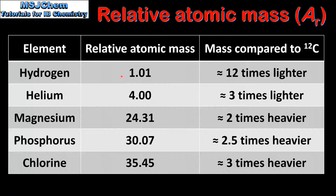We can also use Relative Atomic Masses to compare the masses of different atoms. For example, an atom of helium is approximately 4 times heavier than an atom of hydrogen, and an atom of magnesium is approximately 6 times heavier than an atom of helium. So from this table we can see that Relative Atomic Mass values can be used to compare the masses of different atoms to carbon-12, as well as each other.